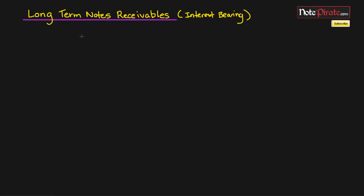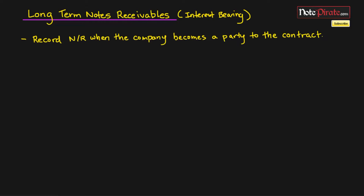In this tutorial, what's different from our previous tutorials is that we're talking about long-term notes receivables rather than short-term receivables. I'm going to lay out some criteria for you to check off before you recognize these long-term notes receivables. First up, to record a note receivable, the company has to become a party to the contract. A contract is established with an offer, acceptance, and consideration, which means both parties have to give up something of value.